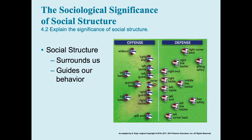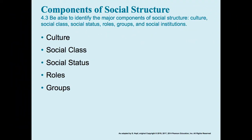The textbook author's example is the idea of coming back years later to your alma mater to watch a football game. Even though all the players have changed and different positions are filled by different people, the functions of the positions are the same. The game depends on the roles or social statuses of the different players — the plays might change, but the roles don't. The same is true for society: the players change, but the roles and statuses for those roles stay the same.